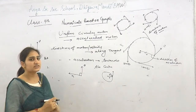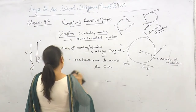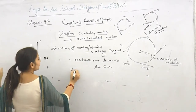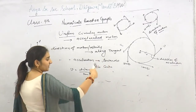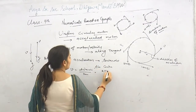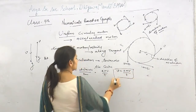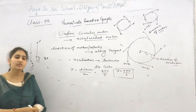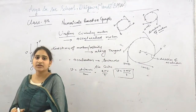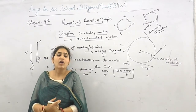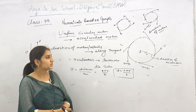In uniform circular motion, velocity is along the tangent and acceleration is towards the center, so they are perpendicular to each other. This answers the NCERT question about whether velocity and acceleration can be perpendicular — yes, in uniform circular motion. This is our last topic in this chapter. Refer to reference books and NTSE books for related questions in the NCERT exercise. Thank you.